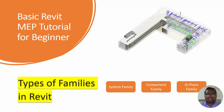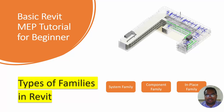Hello everyone, welcome to BIMmodeler. This is Ranj. In this video tutorial you will be learning what are the types of Revit families. It is important that before starting any Revit project or learning Revit, you have to understand what types are available. There are three types basically: system family, component family, and in-place family.